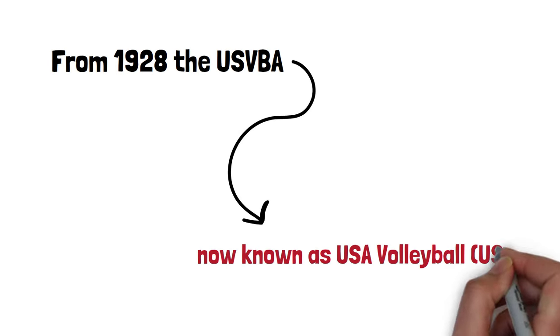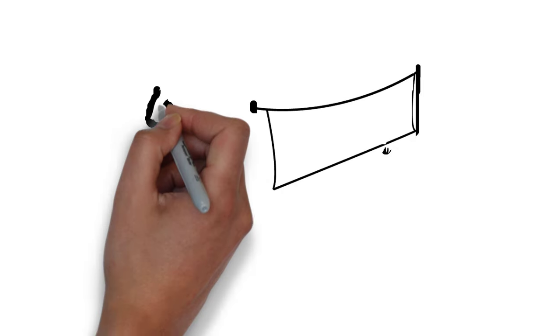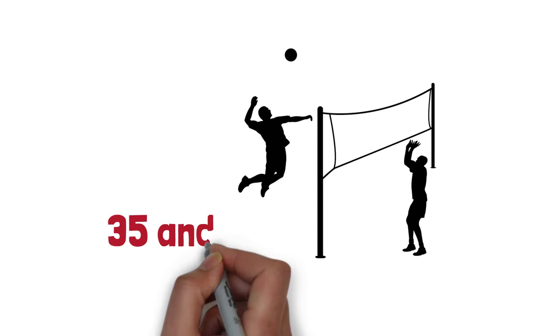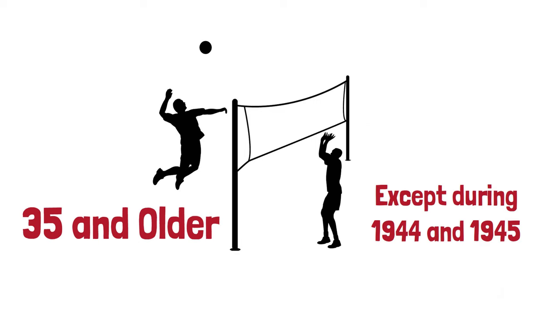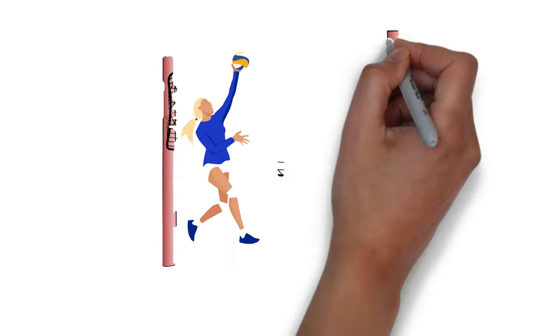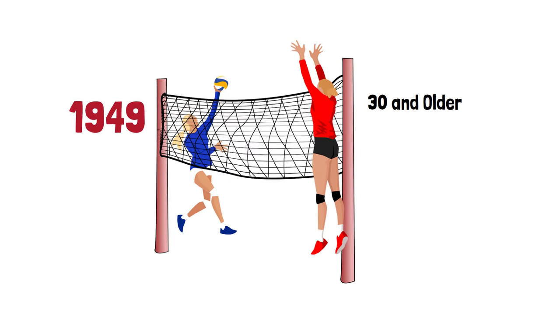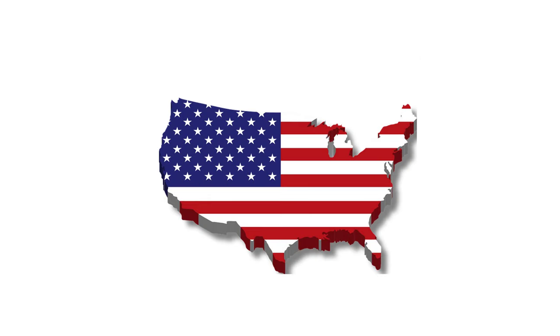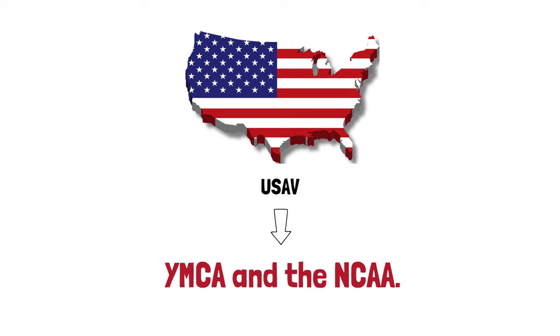From 1928, the USVBA, now known as USA Volleyball, USAV, has conducted annual national men's and senior men's, age 35 and older, volleyball championships, except during 1944 and 1945. Its women's division was started in 1949, and a senior women's division, age 30 and older, was added in 1977. Other national events in the United States are conducted by member groups of the USAV such as the YMCA and the NCAA.